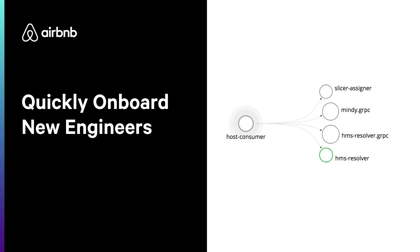Another problem that service maps address is that architectural diagrams are rarely up to date. One interesting side effect of this is that it becomes really difficult to onboard new hires. With an always up-to-date service map, we're able to quickly help new hires educate themselves about the dependencies relevant for their new job, which speeds up onboarding and allows us to more quickly add new members to our team.